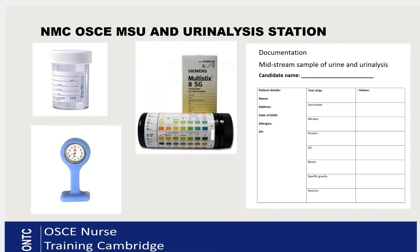Because it's a very tight station, the examiner will tell you that the ID check and allergy check have already been completed. You will be given a urine sample and reagent strips — normally from a company called Siemens — to do your urinalysis within the set time as per manufacturer's instructions. You are also given a watch for timing, urinalysis sticks, and the latest documentation published by the NMC test centres.